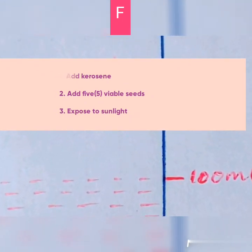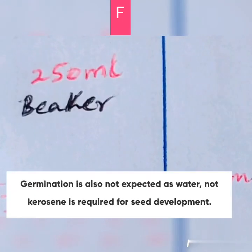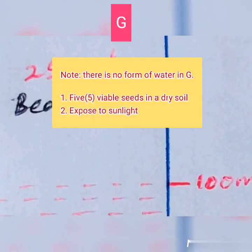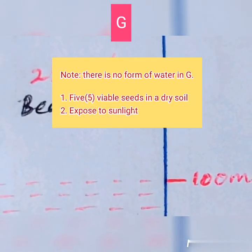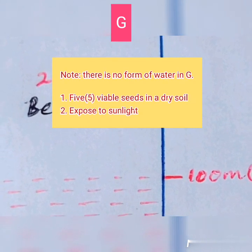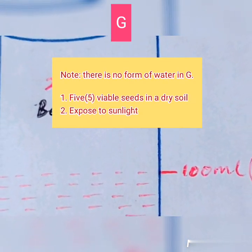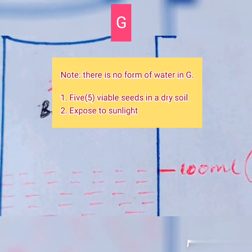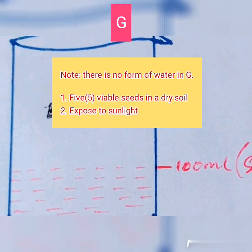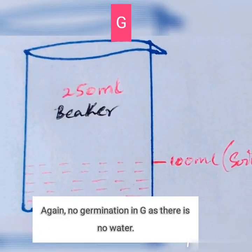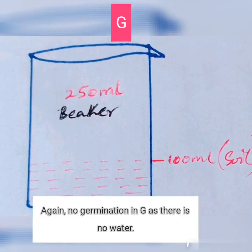To the beaker labeled F, in place of water, enough kerosene was added, so we don't expect germination as water is required — germination hardly occurs in the absence of water. The beaker labeled G contains soil that is very dry, with no water. We don't expect to see germination, as water is one of the primary conditions required for germination.